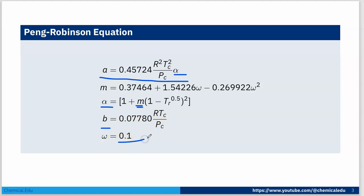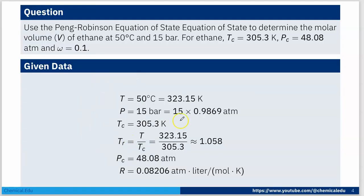T is given as 50°C. Converting 15 bar to atm gives 14.805. Tc = 305.3 K, so Tr = T/Tc = 323.15/305.3 = 1.058. Pc = 48.08 atm and R = 0.08206 atm·liter/mol·K.